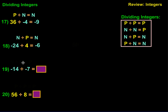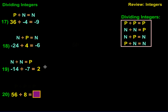For number 19, we have two negative numbers — a negative divided by a negative — which is going to get us a positive. So we have negative 14 divided by negative 7. 14 divided by 7 is 2, and it will be positive 2. And for number 20, a positive divided by a positive gets us a positive answer. So 56 divided by 8 is going to give us 7.